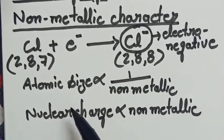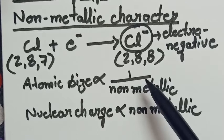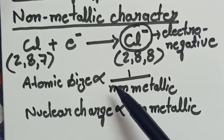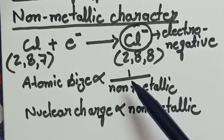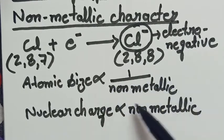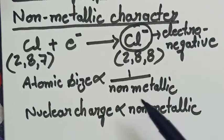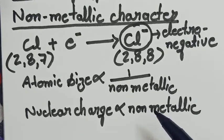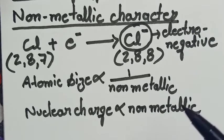On the basis of atomic size, non-metallic character functions opposite to metals. A decrease in atomic size increases the attraction between the nucleus and electrons and the tendency to gain electrons, making the element more non-metallic. While increasing the nuclear charge, the greater the nuclear charge, the greater is the tendency to gain electrons, and hence the non-metallic characteristic also increases.